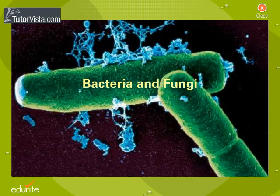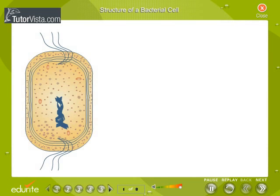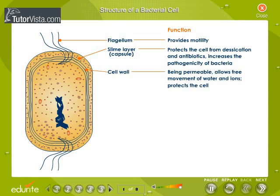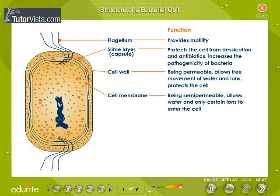Bacteria and fungi. Structure of a bacterial cell: observe the structure of a bacterial cell shown here. The flagellum provides motility. The slime layer protects the cell from desiccation and antibiotics, and increases the pathogenicity of bacteria. The cell wall, being permeable, allows free movement of water and ions and protects the cell. The cell membrane, being semi-permeable, allows water and only certain ions to enter the cell.